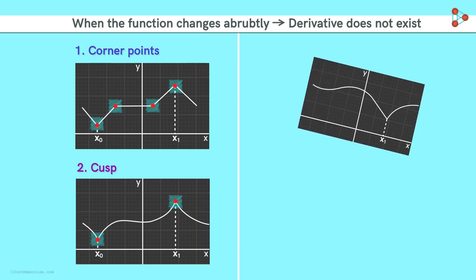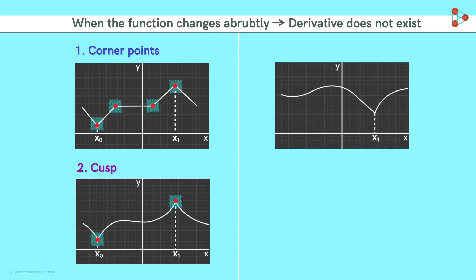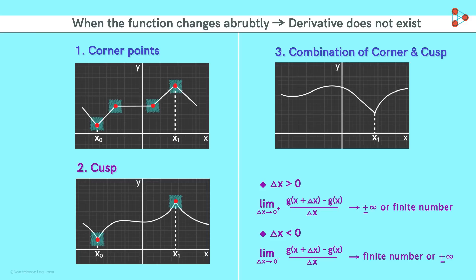Now there might occur sharp turns which are combinations of these two types. As delta x tends to zero from this side, we get a tangent line with a finite slope. And from the other side, we get a tangent line with infinite slope. In such cases also, we can directly see that the derivative at such points does not exist.